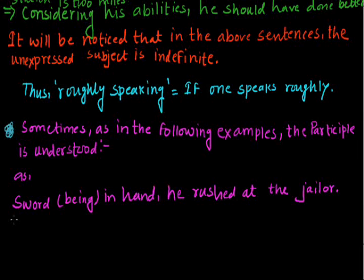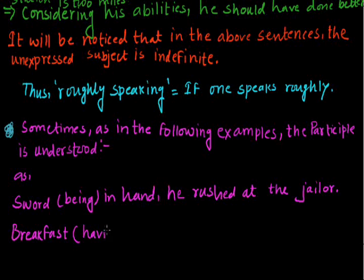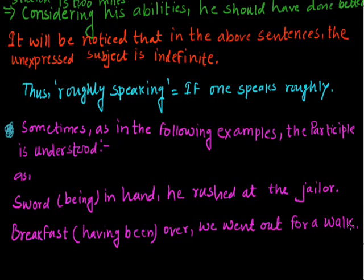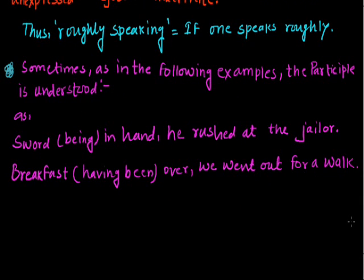One more example: 'breakfast having been over, we went out for a walk.' Here 'having been' is the perfect participle, and we have omitted this to say simply 'breakfast over, we went out for a walk.' We should take care while constructing such sentences — as far as possible we should use the participle and mention the proper subject of reference. When it is not possible, we should try to make sentences in which the subject can be clarified.